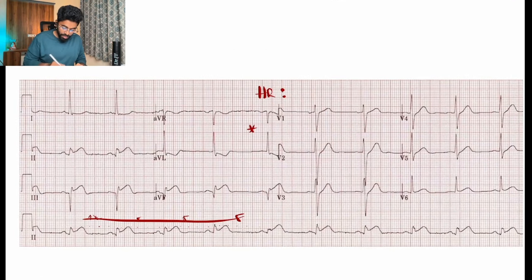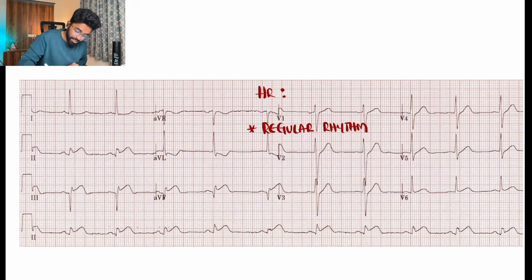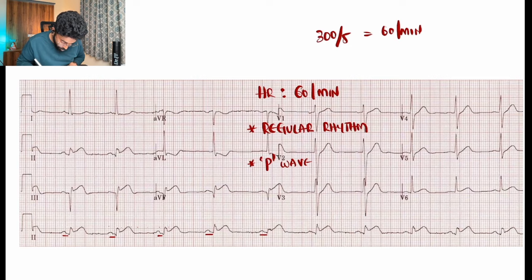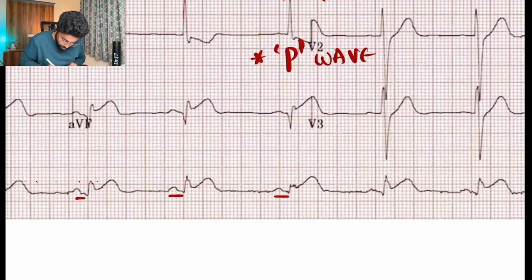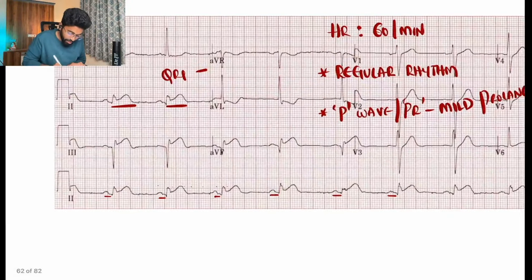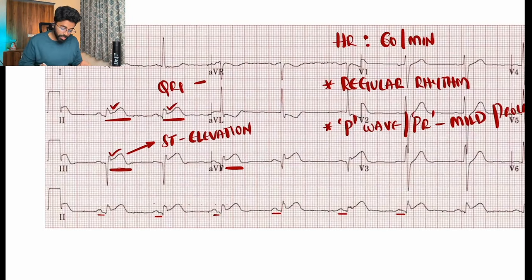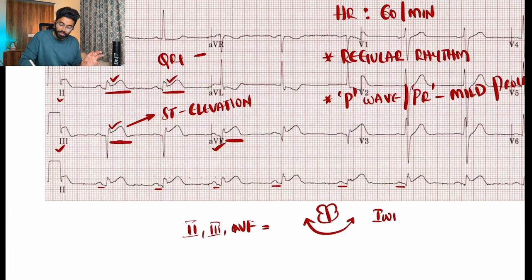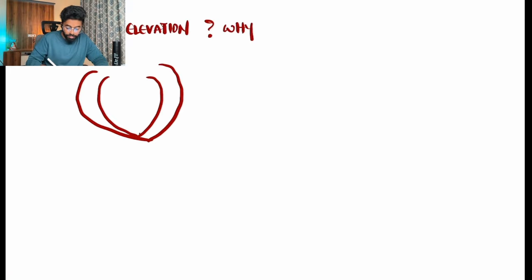For this ECG, we calculate heart rate as 300 divided by 5, which is 60 per minute. The rhythm is regular. The P wave and PR interval are present but abnormal — the PR interval is occupying more than one box. There are also changes in QRS and clearly visible ST elevation in leads 2, 3, and AVF, so this is an ECG of inferior wall MI.